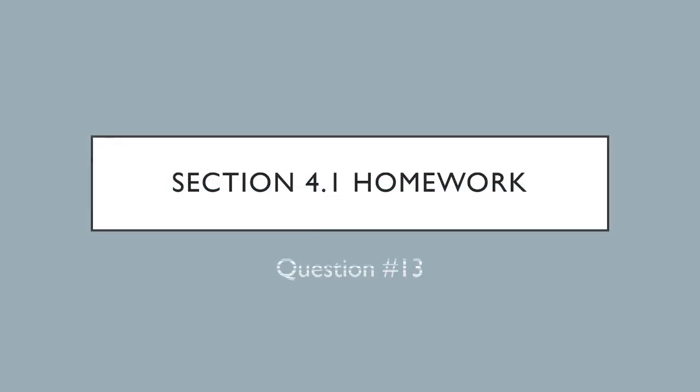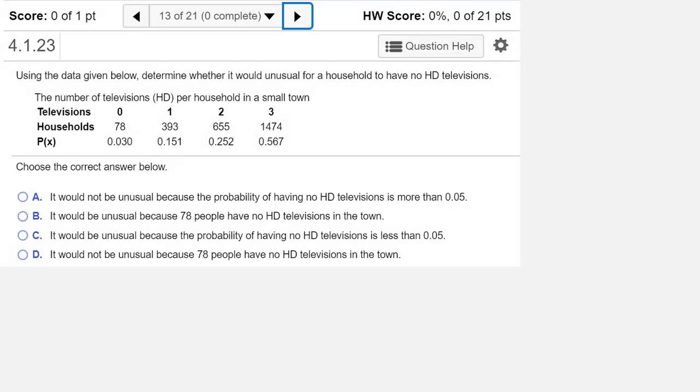We're looking at homework from section 4.1. This is question number 13. Using the data given below, determine whether it would be unusual for a household to have no HD televisions.